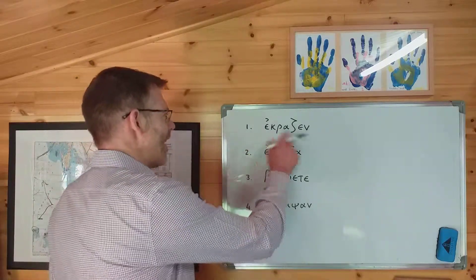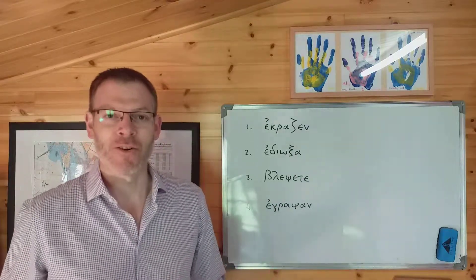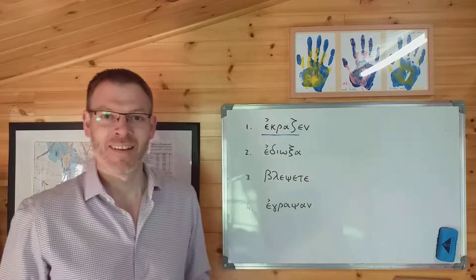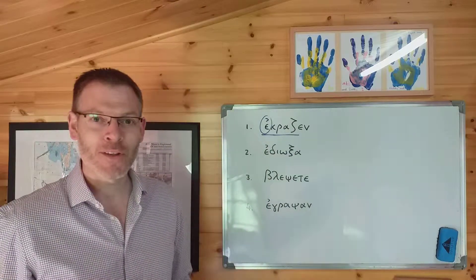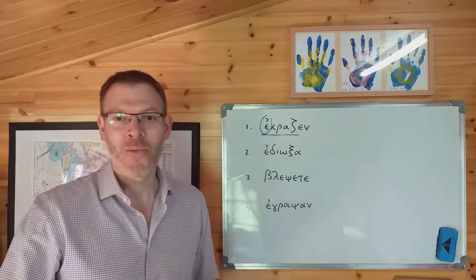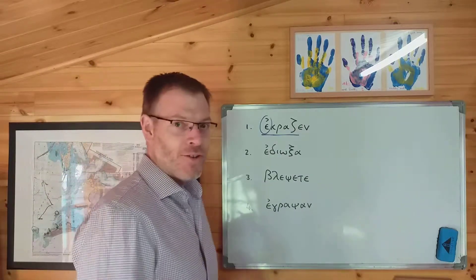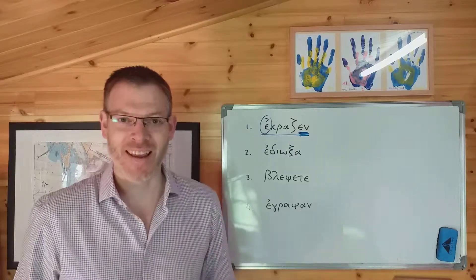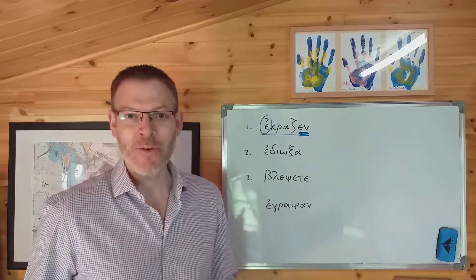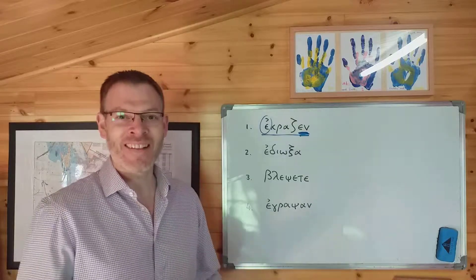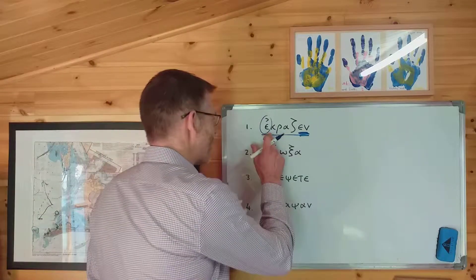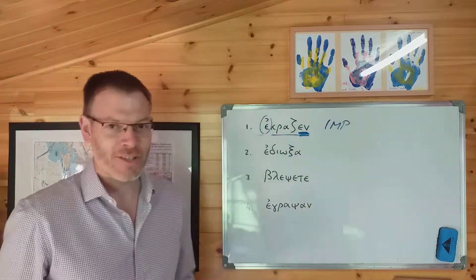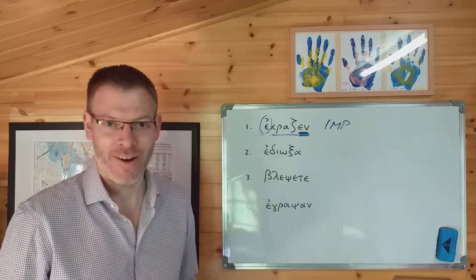Look at this one, for example: ekranzen. If you don't know your vocabulary, what are you going to do with this? You don't know whether the verb stem is kranc or ekranc, so you don't know whether the epsilon is an augment or part of the stem, and therefore you don't know whether it's imperfect or present. You could just about get lucky, because if you really knew your endings, you'd know that -n is a third person singular imperfect ending, not a present ending. But frankly, if you're learning the endings well enough to spot that, you should be learning the vocabulary well enough to spot that the stem is kranc, and therefore this is the imperfect of krazo, meaning he was crying out.